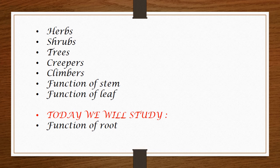In the previous classes we have been studying what are herbs, what are shrubs, what are trees, what are creepers, what are climbers. We have studied about the function of the stem — that stem conducts water and minerals for the plant and supports the leaves and other parts. About the leaf, we studied the two main functions: photosynthesis and transpiration.